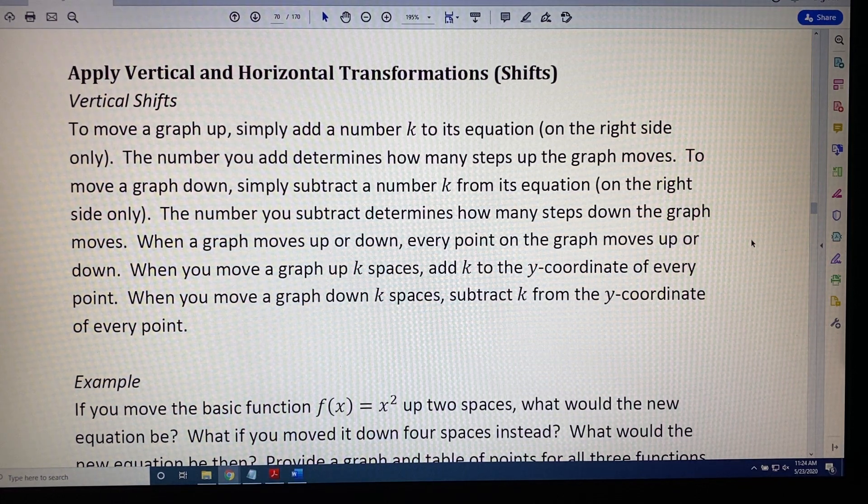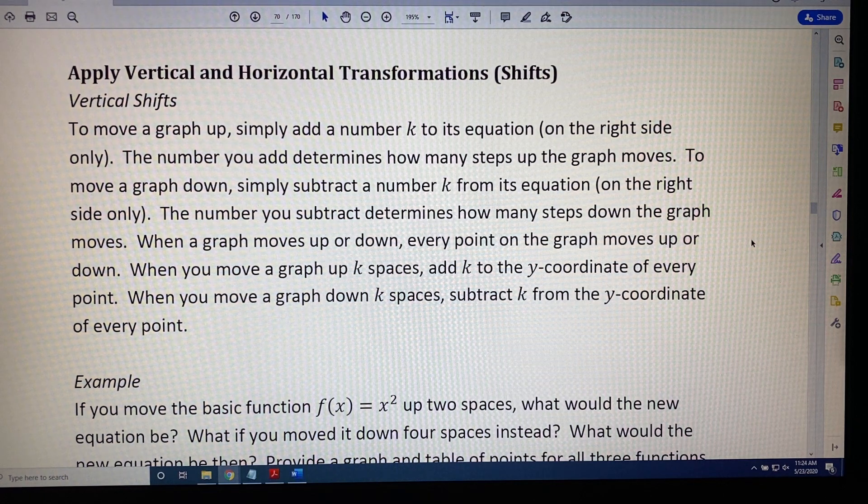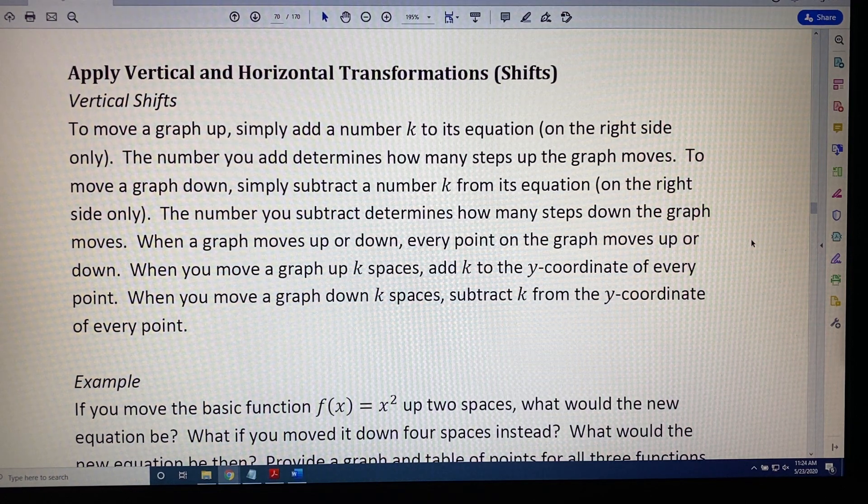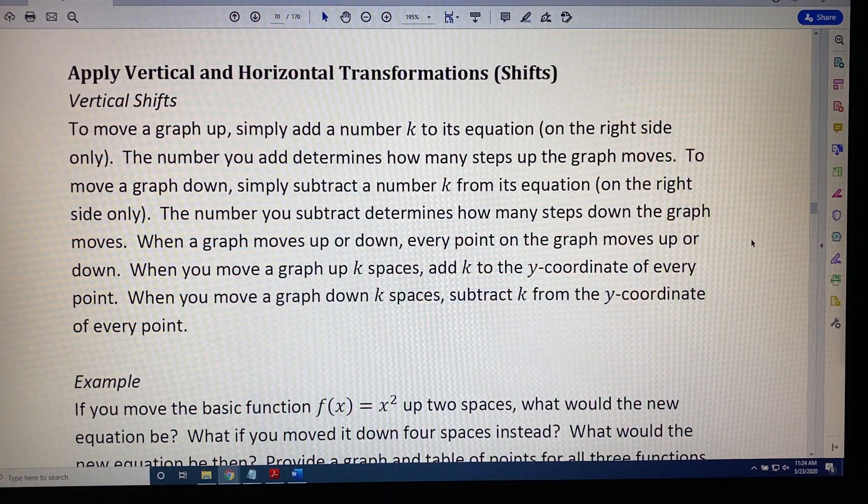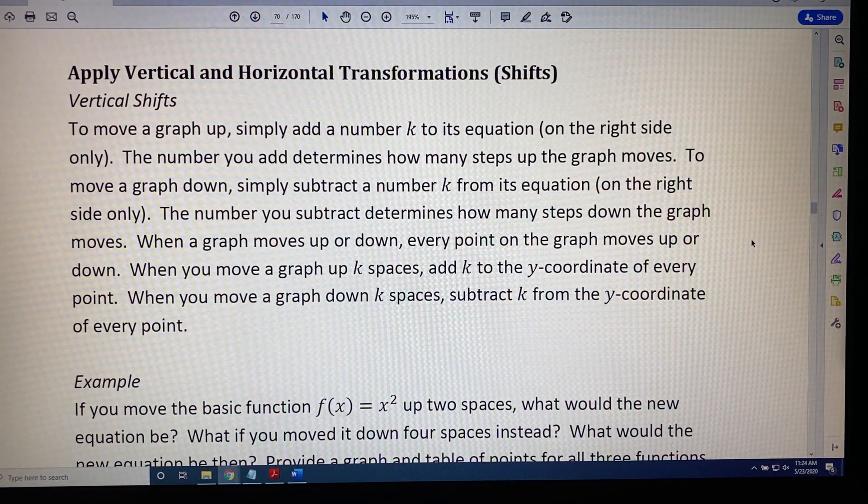To move a graph down, simply subtract a number k from its equation on the right-hand side only. The number you subtract determines how many steps down the graph moves.